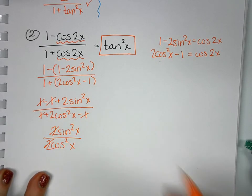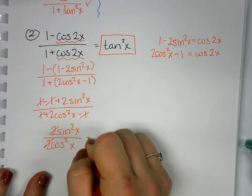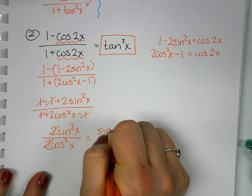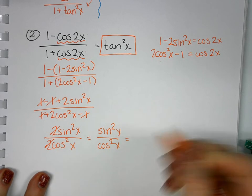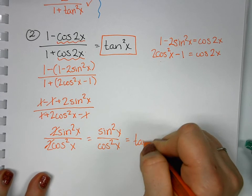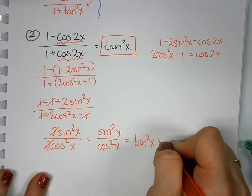I can reduce the twos and I'm left with sin²x divided by cos²x. Well, by definition, that's tan²x, which gets me where I want to go.